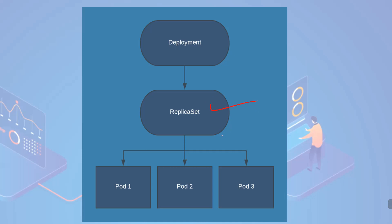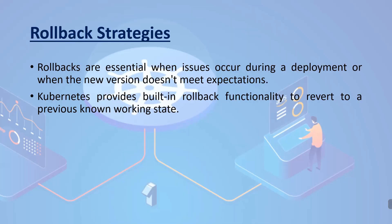Let's understand this flowchart. A deployment is a high-level object above the replica set. The deployment controls the replica sets, and under the replica sets we have three pods. Rollbacks are essential when issues occur during a deployment or when a new version does not meet expectations. Kubernetes provides a built-in rollback function to revert to a previous known working state.